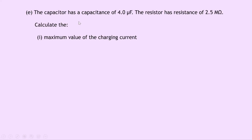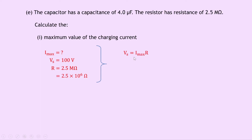Part E gives the capacitor capacitance as 4.0 microfarads and the resistor resistance as 2.5 megaohms (2.5 × 10⁶ Ω). Part 1 asks for the maximum charging current. Using Vs = Imax × R, we rearrange to get Imax = Vs / R = 100 / (2.5 × 10⁶), giving a final answer of 4.0 × 10⁻⁵ amps.